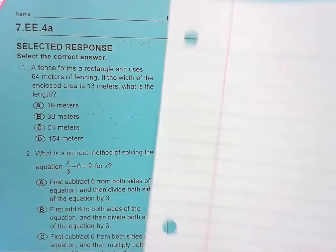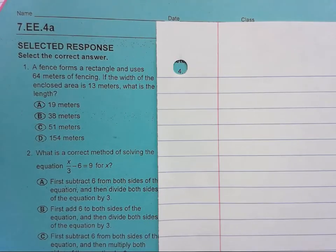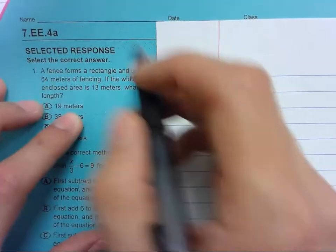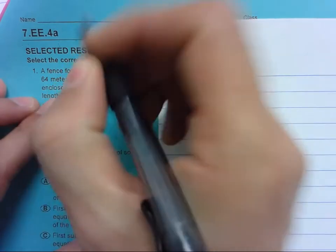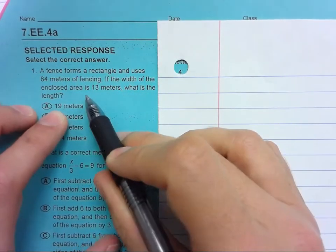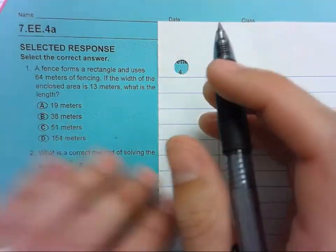7.EE.4a. Let's look at these. A fence forms a rectangle and uses 64 meters of fencing. If the width of the enclosed area is 13 meters, what is the length?